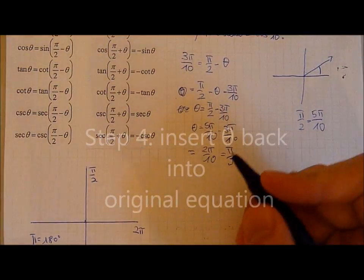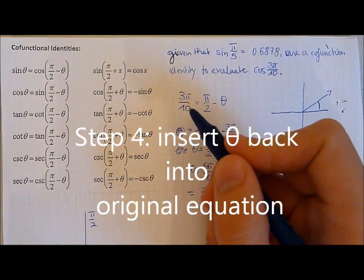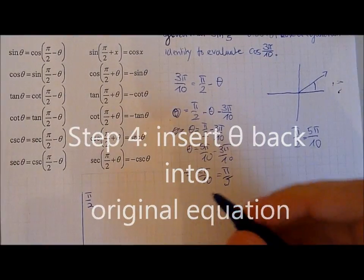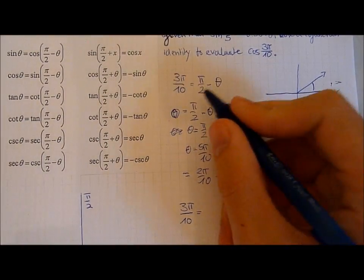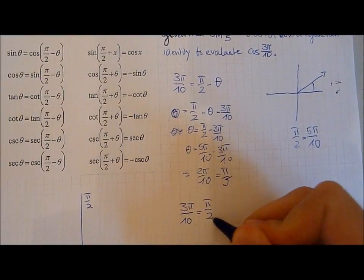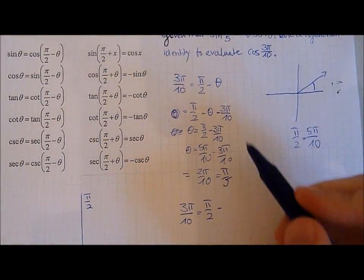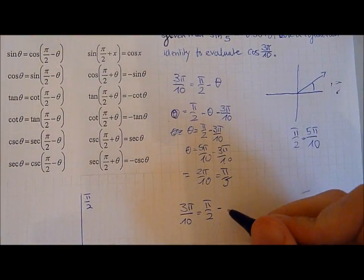Now we can simply rewrite the equation. So 3 pi over 10 equals pi over 2 minus beta. Now we just solve for beta. It's pi over 5.